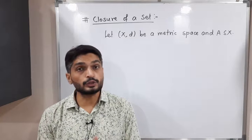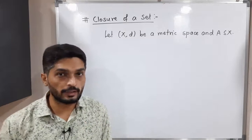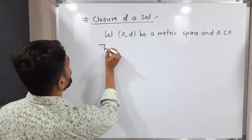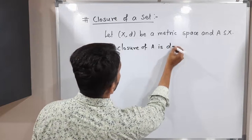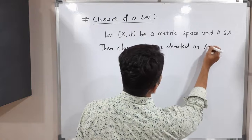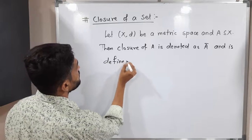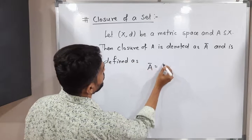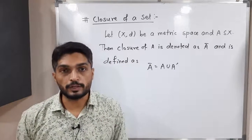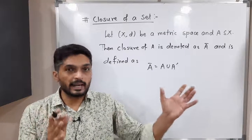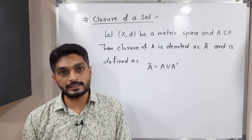Let us discuss the concept of closure of a set. If you have a metric space X with subset A of X, then the closure of A is denoted as Ā and is defined as Ā = A ∪ A', where A' means the set of all limit points of A, also called the derived set. So if you take the derived set union with A itself, you will have the closure of it.